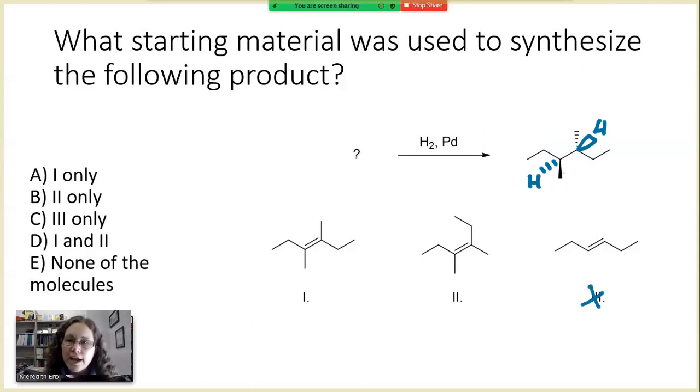In the product, we can see that the hydrogen atom on the left-hand side is dashed and the hydrogen atom on the right-hand side is wedged. That's a big red flag that we had a bond rotation occur.